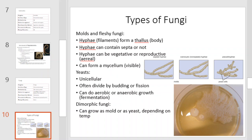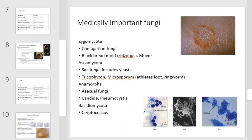Dimorphic fungi can grow as a mold or as a yeast depending on the temperature. Here is a list of some medically important fungi. The zygomycotins, ascomycotins, anamorphs, and basidiomycotins are all groups of medically important fungi. Zygomycotins include things like black bread mold. Ascomycotins are the sac fungi. Anamorphs include Candida, and basidiomycota includes Cryptococcus.